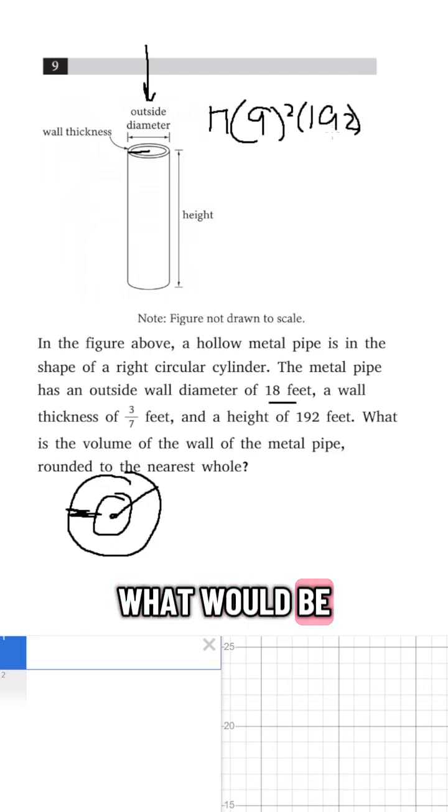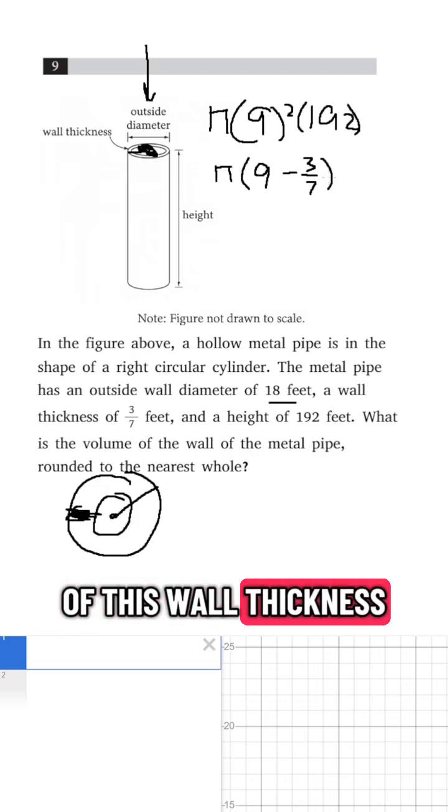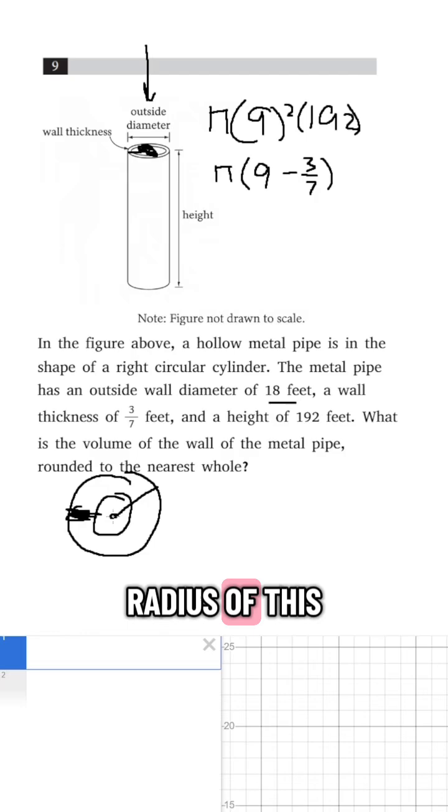And then I asked myself, well, what would be the volume of just the interior part? Well, it would be π times my radius for that is going to be 9, minus this 3/7 feet gets taken away because that's part of this wall thickness. So if I just wanted the radius of this inside part, I would subtract that 3/7.